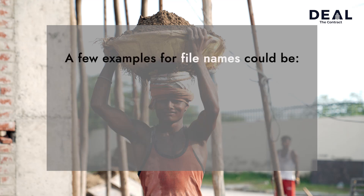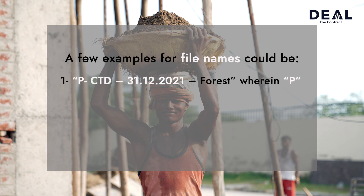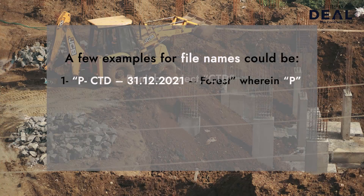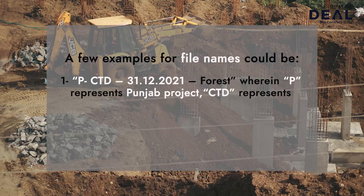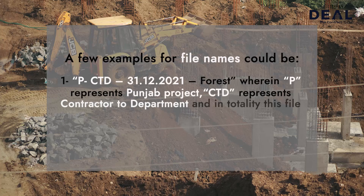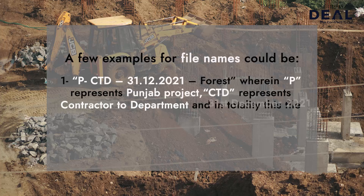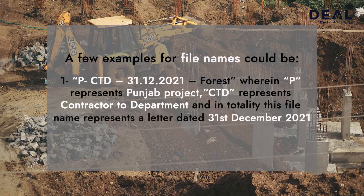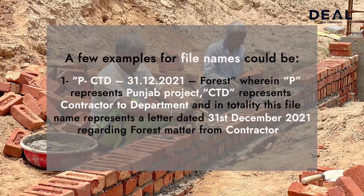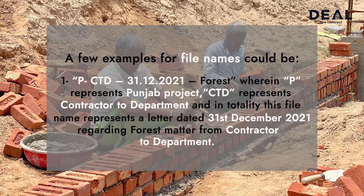A few examples for file names: First, P-CTT-31 December 2021-Forest, wherein P represents Punjab project, CTT represents contractor to department, and in totality this file name represents a letter dated 31 December 2021 regarding forest matter from a contractor to department.